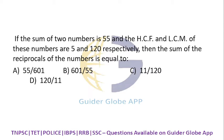Sum of numbers: a + b = 55. If we multiply HCF and LCM, we get the product of the numbers. That is, a × b = HCF × LCM = 5 × 120.